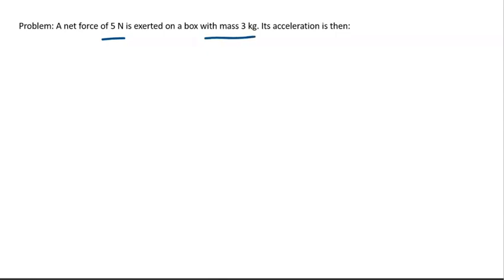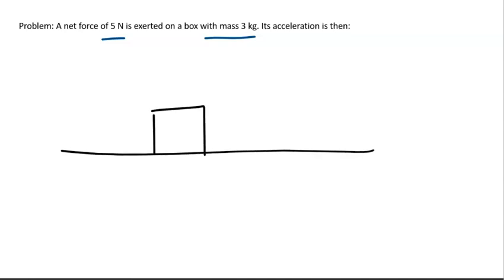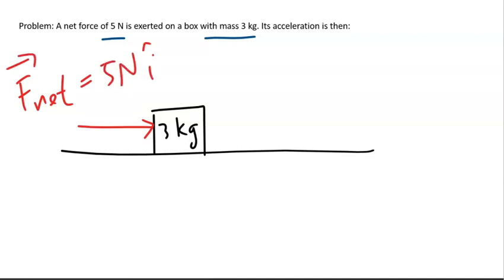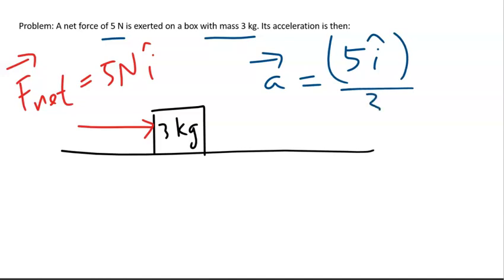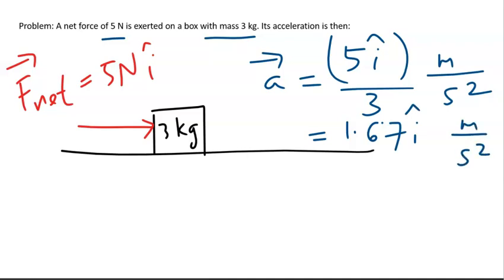A quick example: a net force of 5 Newtons is exerted on a box with a mass of 3 kg. What is its acceleration? You have a box with mass 3 kg and net force of 5 î Newtons acting to the right. The acceleration points in the same direction as the net force, so it is 5 î divided by 3, which is 1.67 î meters per second squared, also pointing to the right.